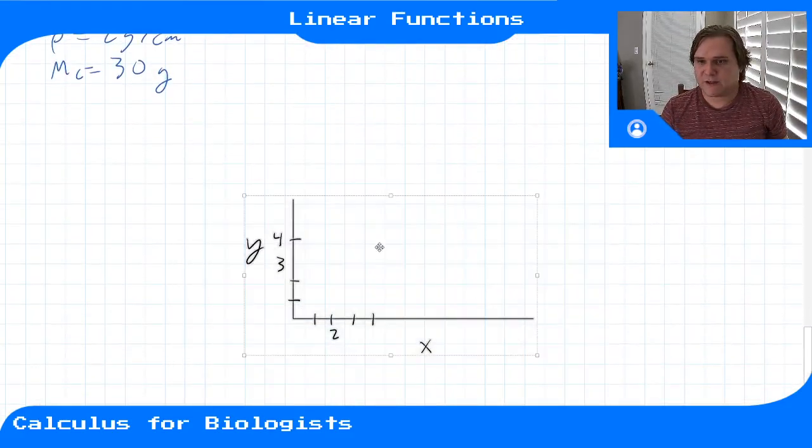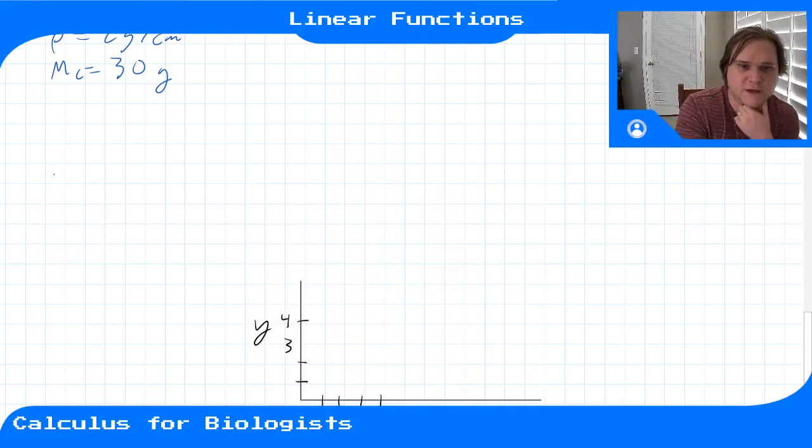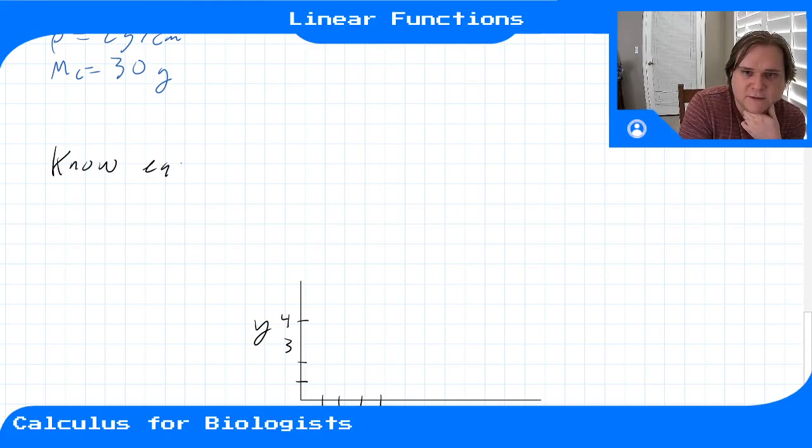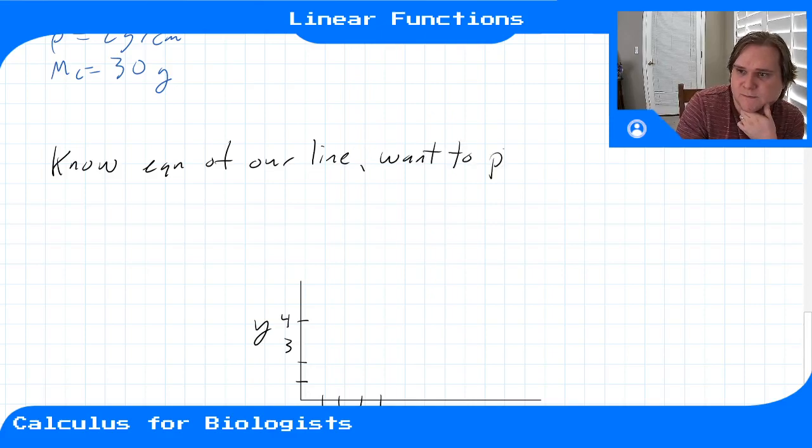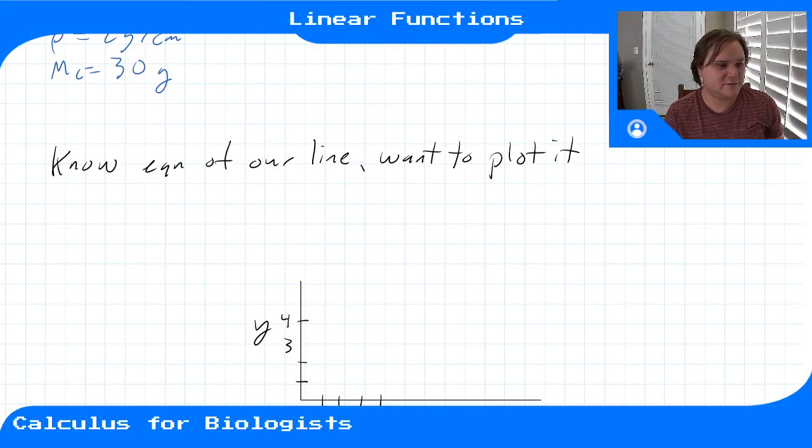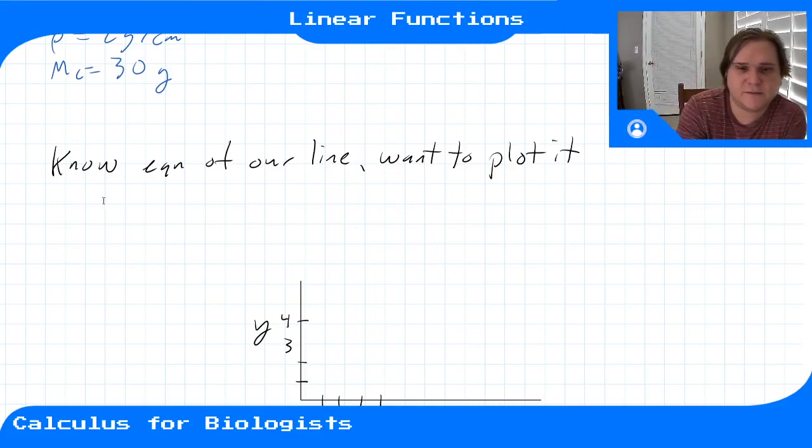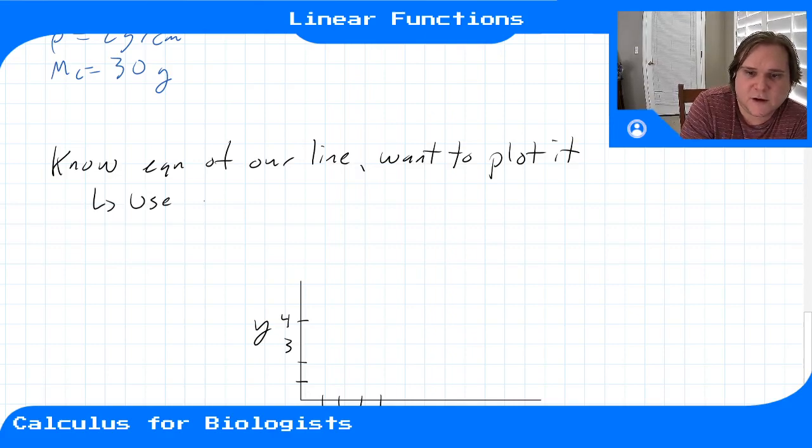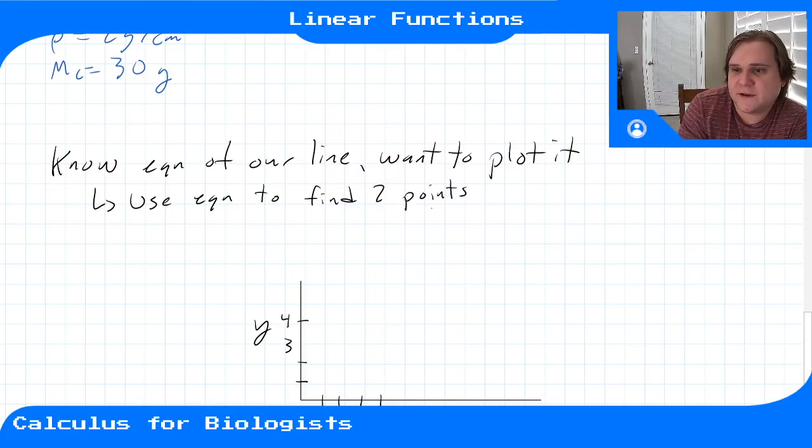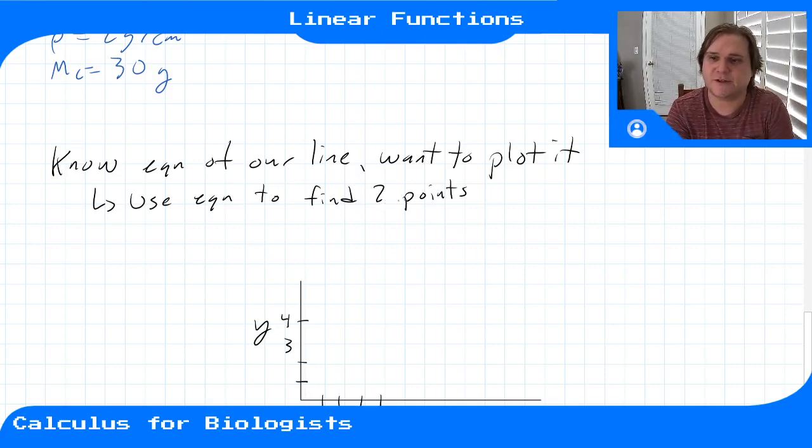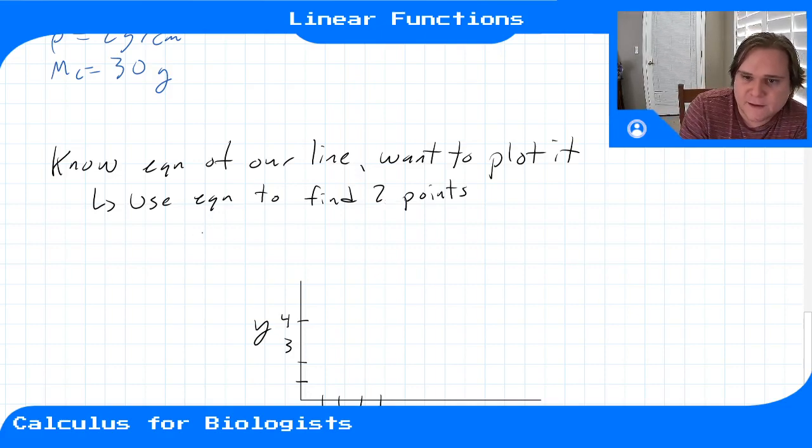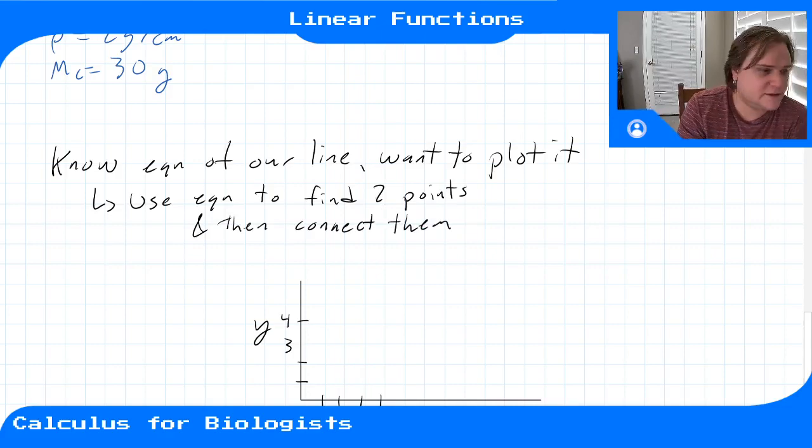So let's say we're going the other direction, and we know the equation of the line, and we want to plot it. So in that case, what are we going to do? Well, we can just use our equation to find points, and then connect them. Use our equation to find two points. You can compute more, or you can just compute two, and then connect them with a ruler to make a nice straight line. And that's all you have to do to plot a line.